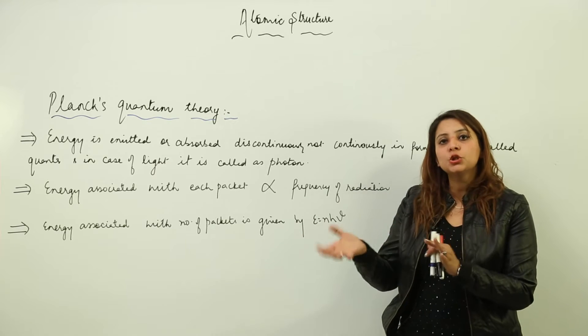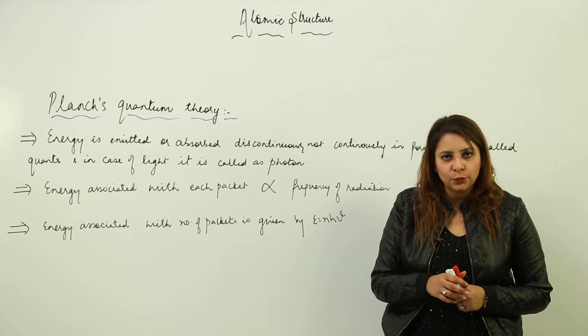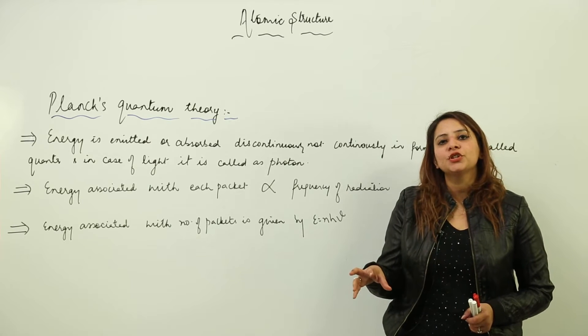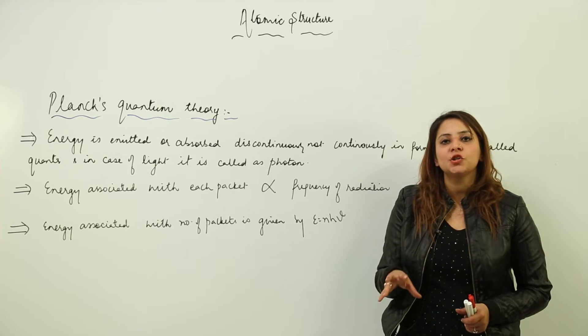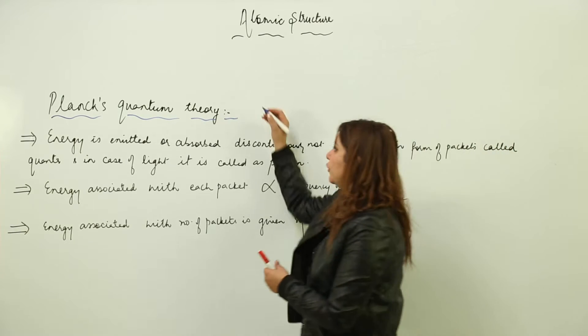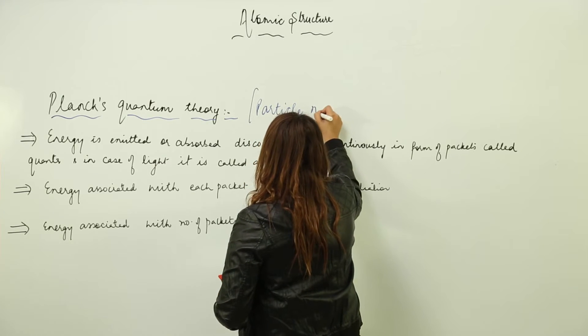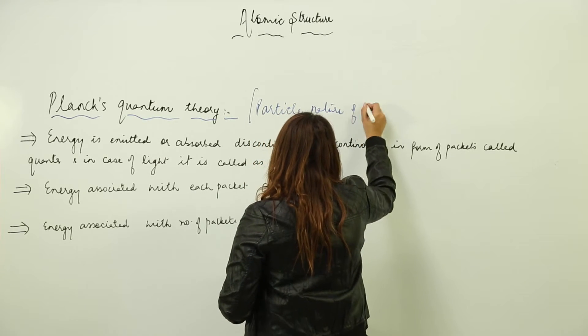We later prove also that light has a dual nature - some of the processes can be explained by considering light as a wave, and there are certain processes which can be explained by considering light as a particle. So this is a theory indicating the particle nature of light.